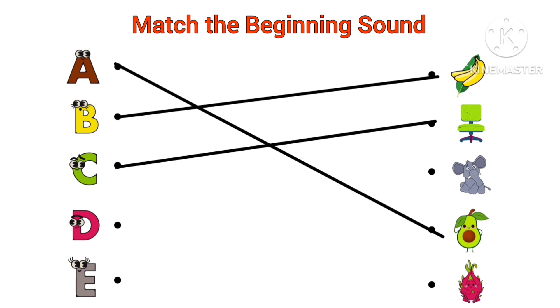C, C for chair. Beginning sound of chair is C. D, D for dragon fruit. Beginning sound of dragon fruit is D.